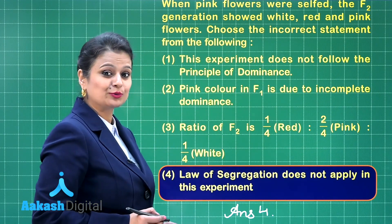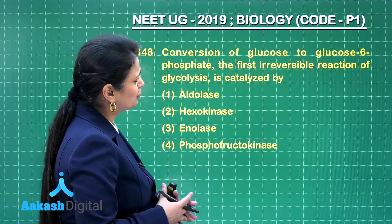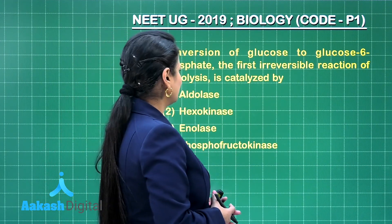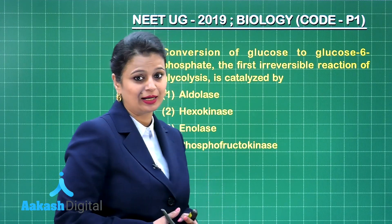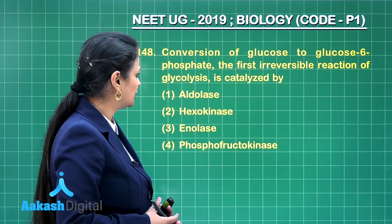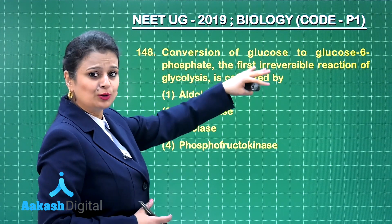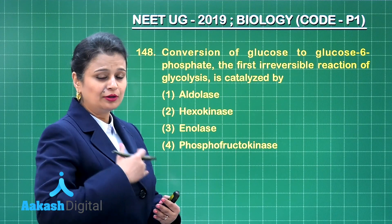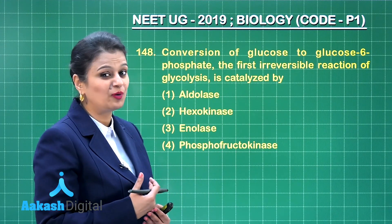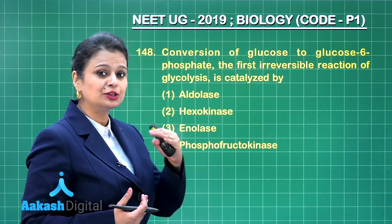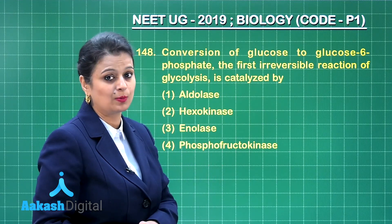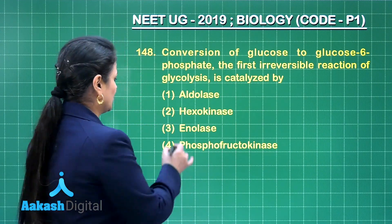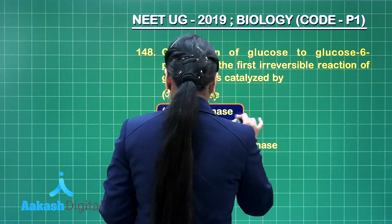Moving on to the next question. Conversion of glucose to glucose-6-phosphate — the first irreversible reaction of glycolysis — is catalyzed by what enzyme? This question is from respiration. Glucose is a 6-carbon sugar and a phosphate is added. This phosphate is added with the help of an enzyme kinase; because it is added to a 6-carbon compound, the enzyme involved is hexokinase. So hexokinase is our answer.